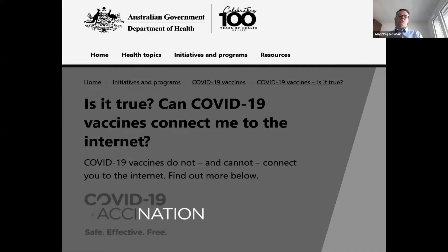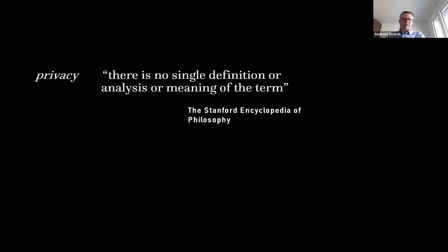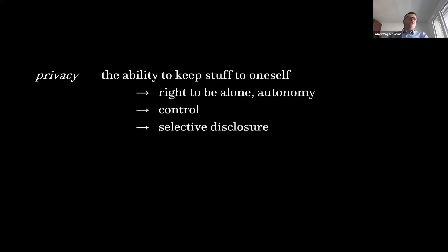So what is privacy itself? We should start with a definition from the Stanford Encyclopedia of Philosophy, which basically says there is no single definition or meaning of the term — and they say that almost immediately at the beginning of the article on privacy. Privacy appears in ordinary language, political discussions, legal texts, and philosophical texts, but there's no clear definition. If we wanted to define it in human terms: privacy is the ability to keep stuff to oneself. This includes the right to be alone, some kind of autonomy, control, and selective disclosure — you are able to say what you would possibly want to disclose to the party you're conversing with or not.